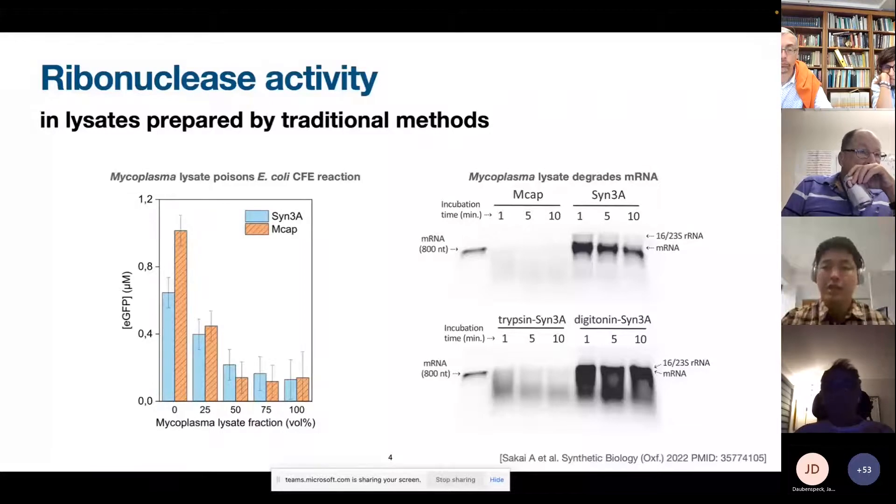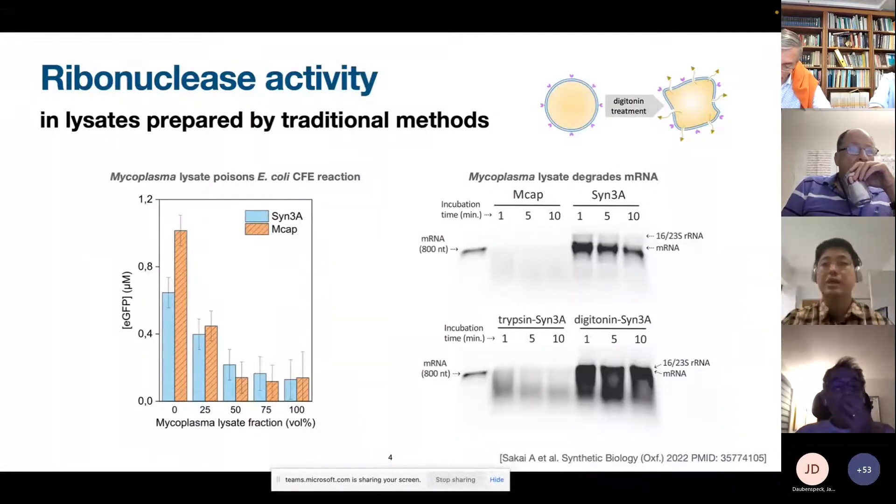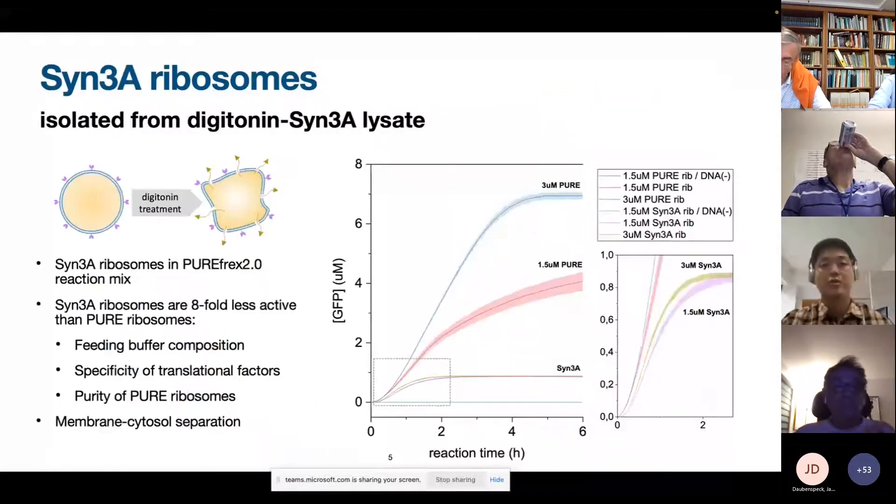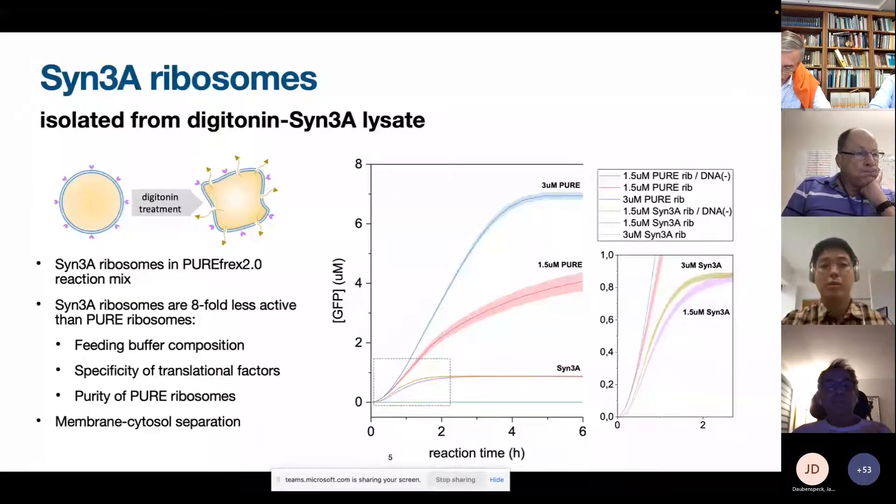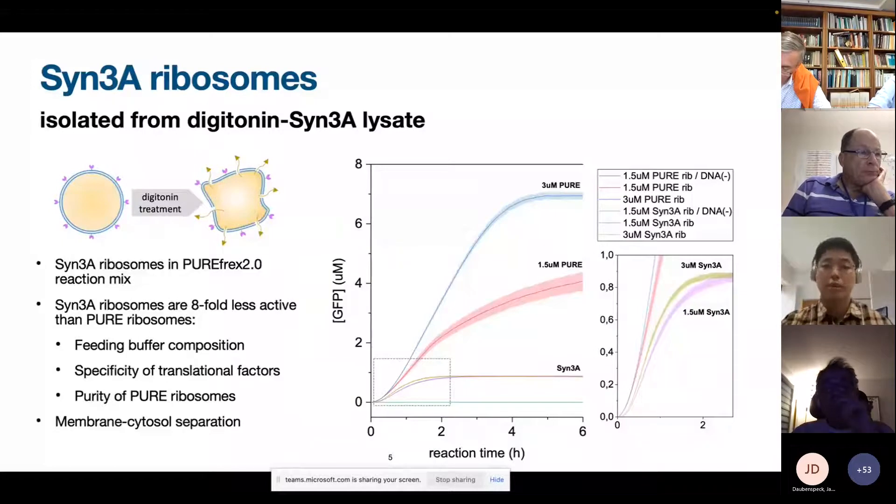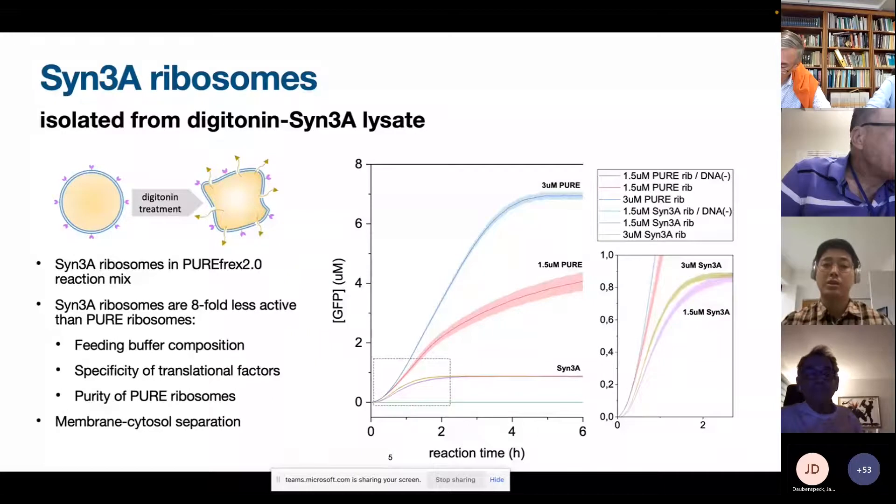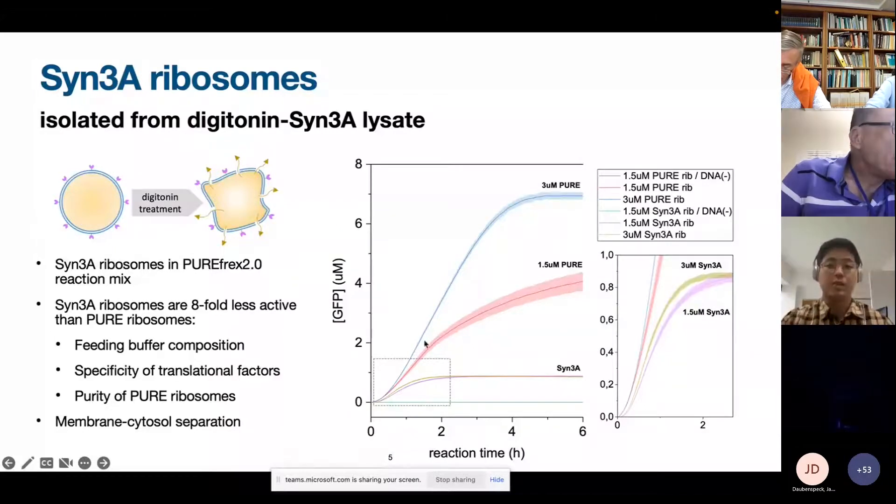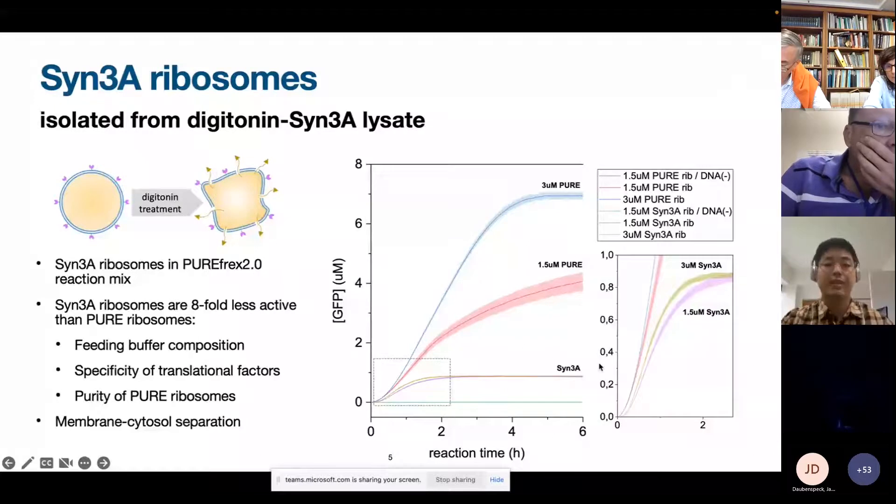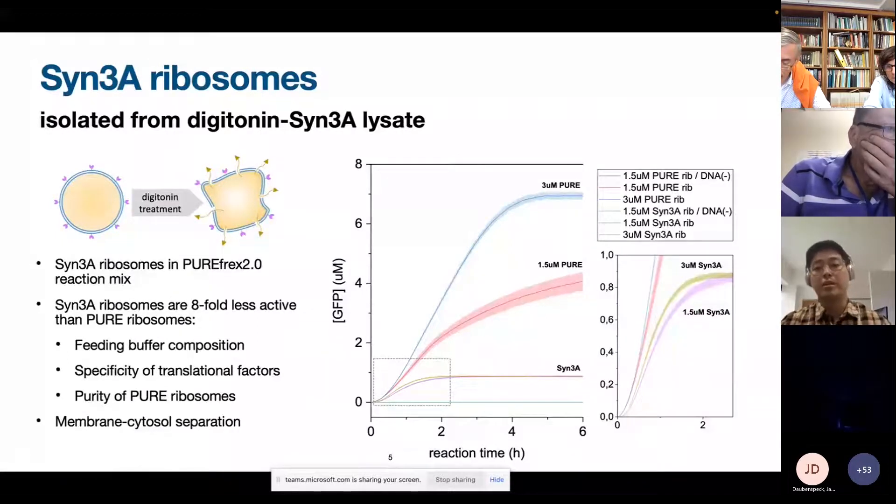So after that, we were interested in studying what happens with these lysates prepared by digitonin a little bit further. So what we did is we isolated ribosomes, only the ribosomes from this digitonin derived SYN3A lysate. And we wanted to measure the activity if these ribosomes are capable of producing proteins. And the way that we tested that, we added these SYN3A ribosomes into a pure system reaction. We just replaced the original ribosomes from pure system to SYN3A ribosomes. And that's the graph that you can see here, the production of GFP for different concentrations of pure ribosomes at 3 and 1.5 micromolar. And for SYN3A, we can see that there is expression of GFP, so the ribosomes are active even though the activity is way lower compared to the original ribosomes from pure.